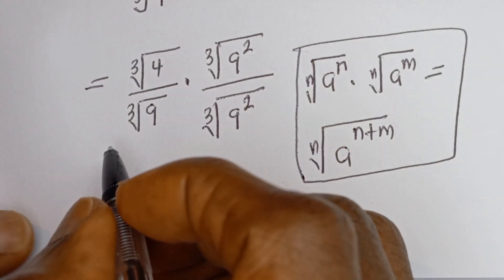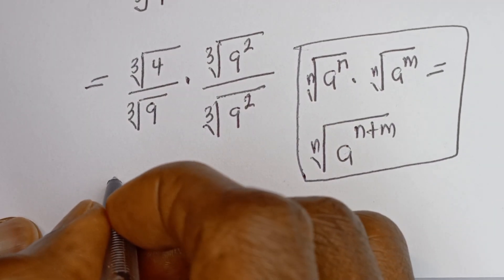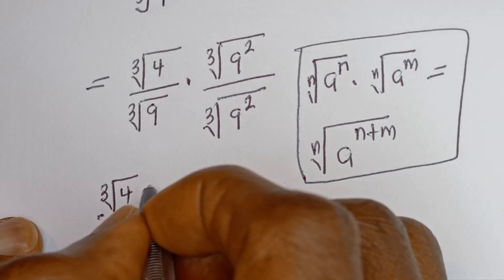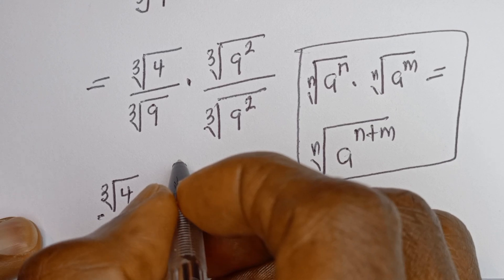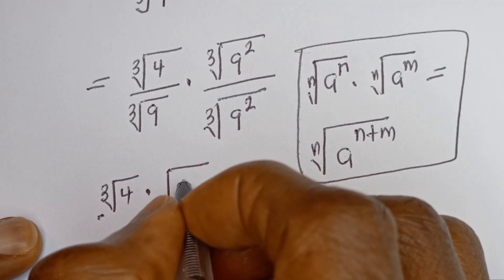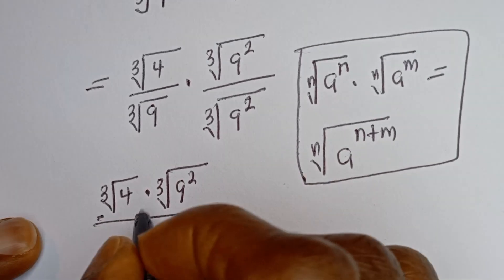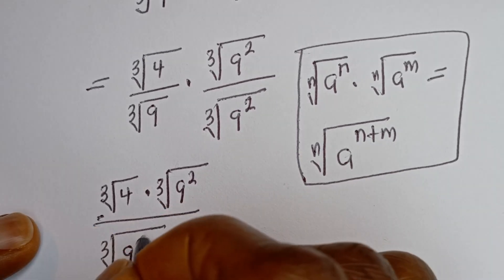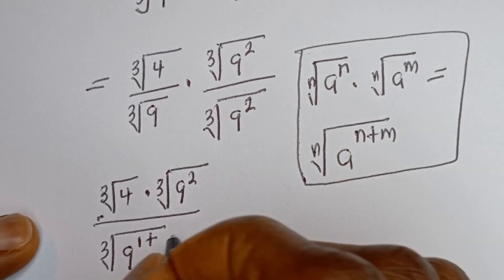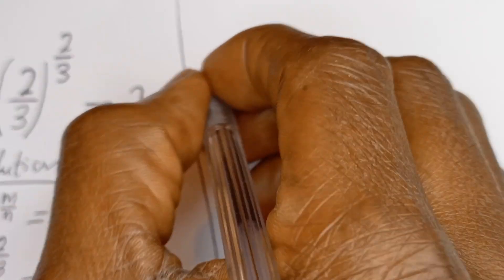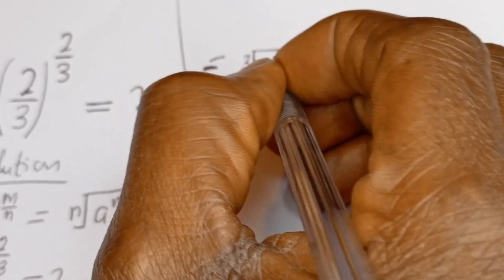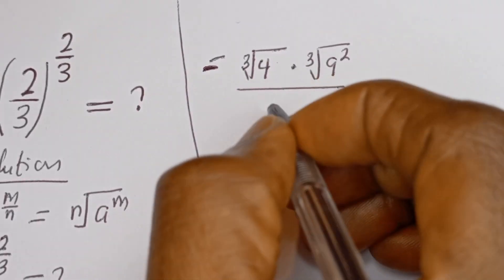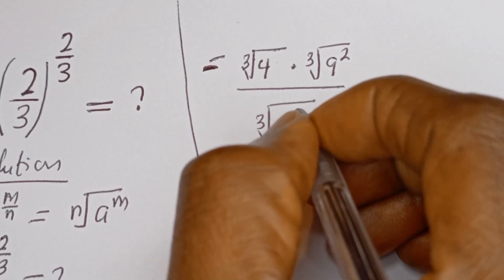Then this culminates as the cube root of 4 multiplied by the cube root of 9 squared, divided by the cube root of 9 to the power of 1 plus 2. And this is equal to the cube root of 4 multiplied by the cube root of 9 squared, divided by the cube root of 9 to the power of 3.